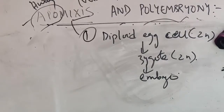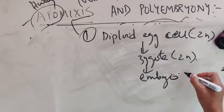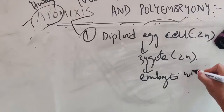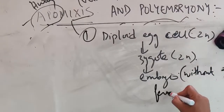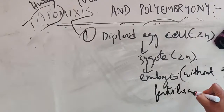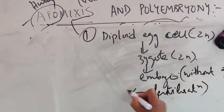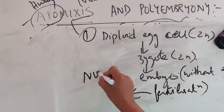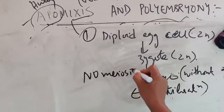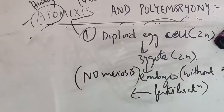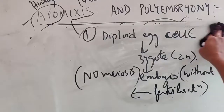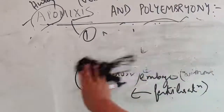If the egg cell is already diploid instead of haploid, it can develop into an embryo without fertilization. That means there is no meiosis — no reduction division — and no fusion. So seeds can be formed without fertilization. This is the first case of how apomixis occurs.